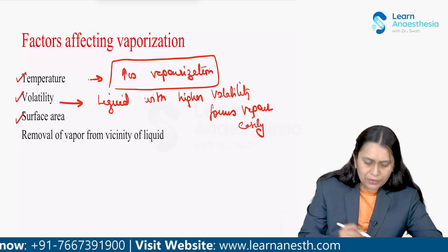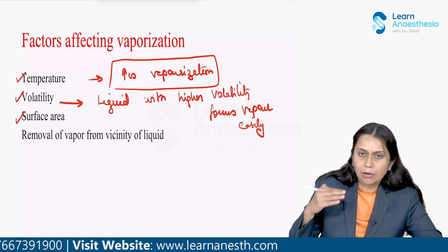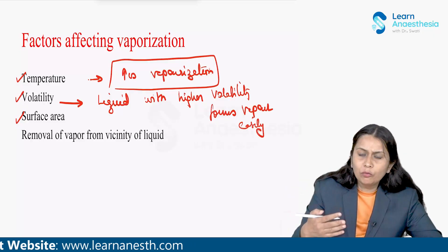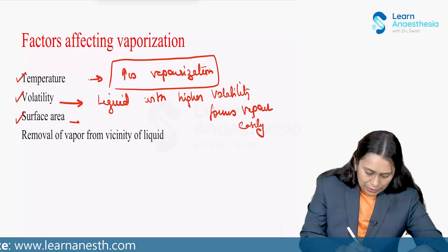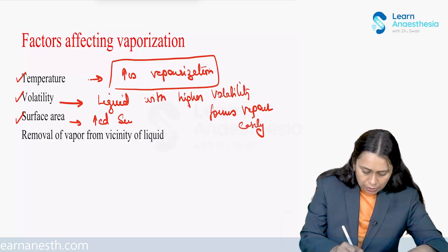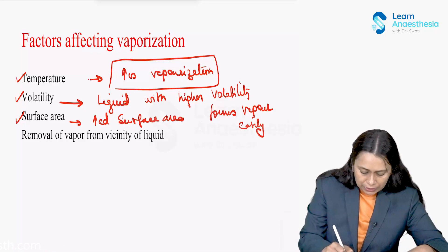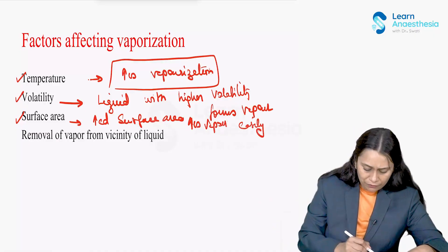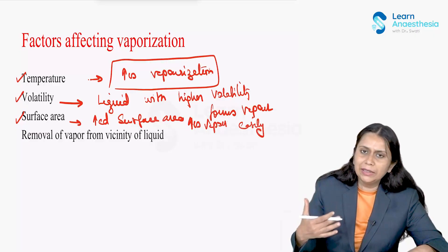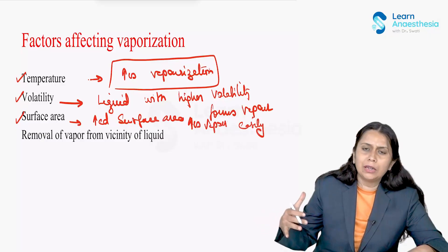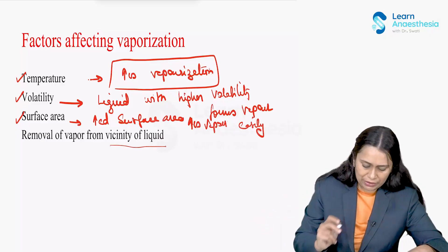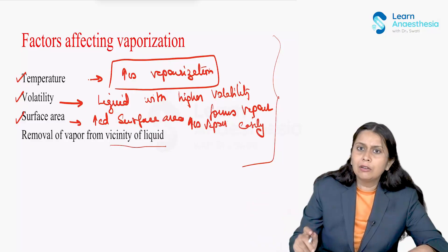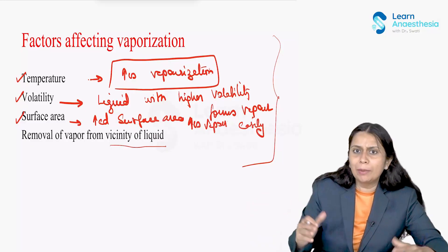The next factor is surface area. Higher the surface area above the liquid, and higher the vacuum above the liquid, the more the vaporization. Increased surface area increases vaporization. Additionally, if we remove the vapor from the vicinity of the liquid, vaporization will increase again. Removal of vapor above the surface of the liquid increases vaporization. All these factors affect vaporization and will help us understand how the vaporizer works.